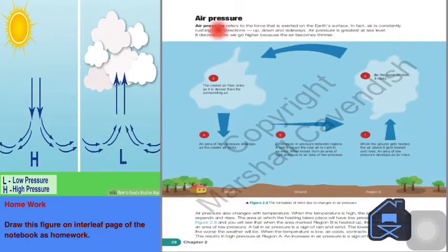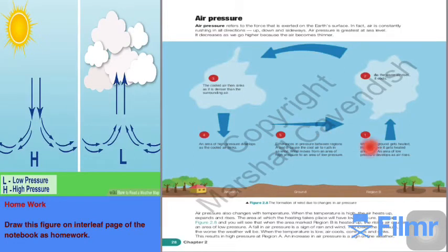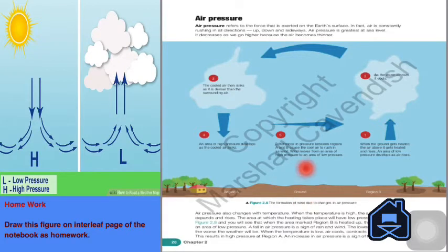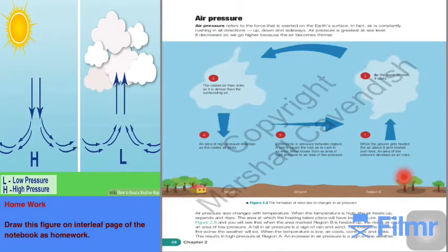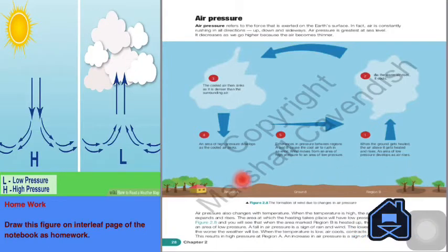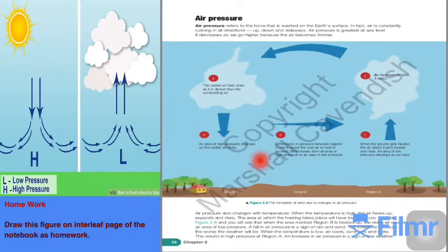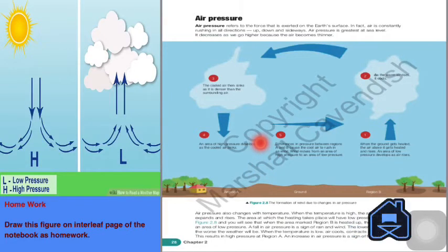Now let's talk about air pressure. Air is constantly rushing in all directions - up, down and sideways with force. This force that exerts on the surface of the Earth is called air pressure. Air pressure is greatest at sea level.